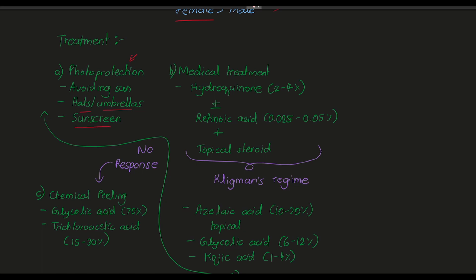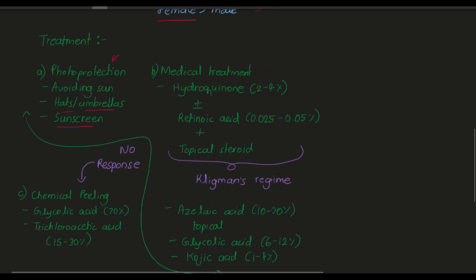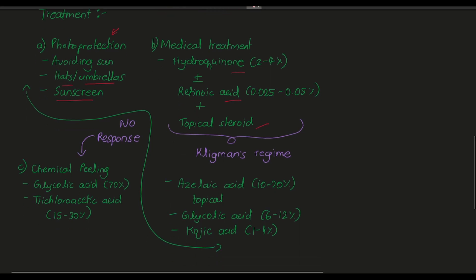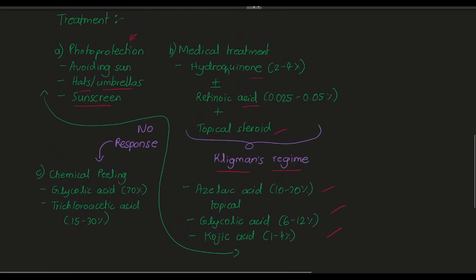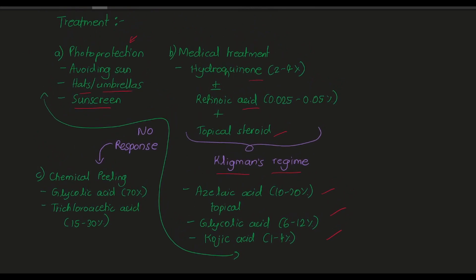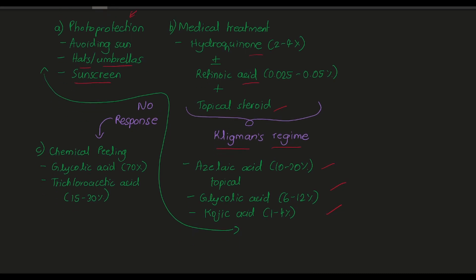Coming to medical treatment, we use drugs such as hydroquinone, retinoic acid, and topical steroids - this is called Kligman's regime. We can also use other drugs like azelaic acid, glycolic acid, and kojic acid. If melasma doesn't respond to both photoprotection and medical treatment, we can go for chemical peeling.